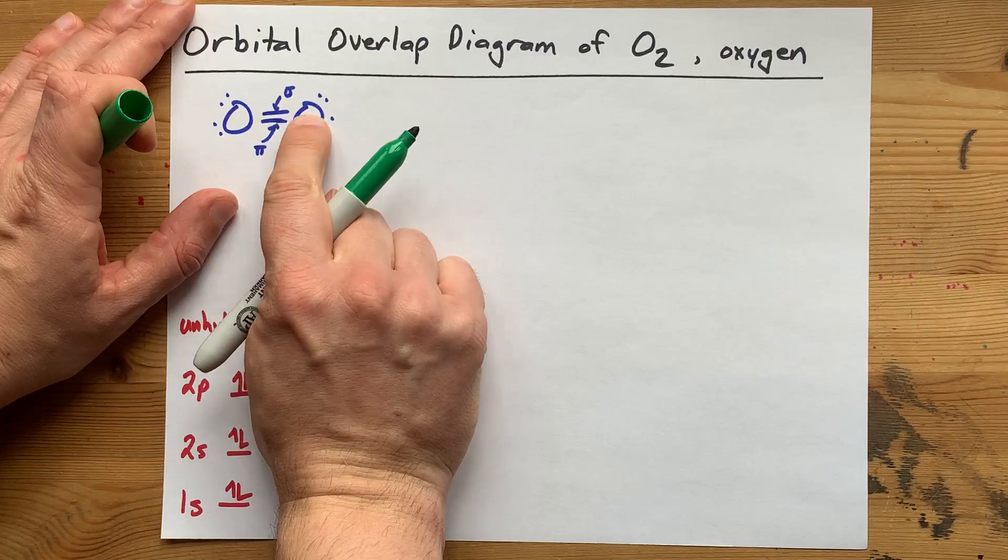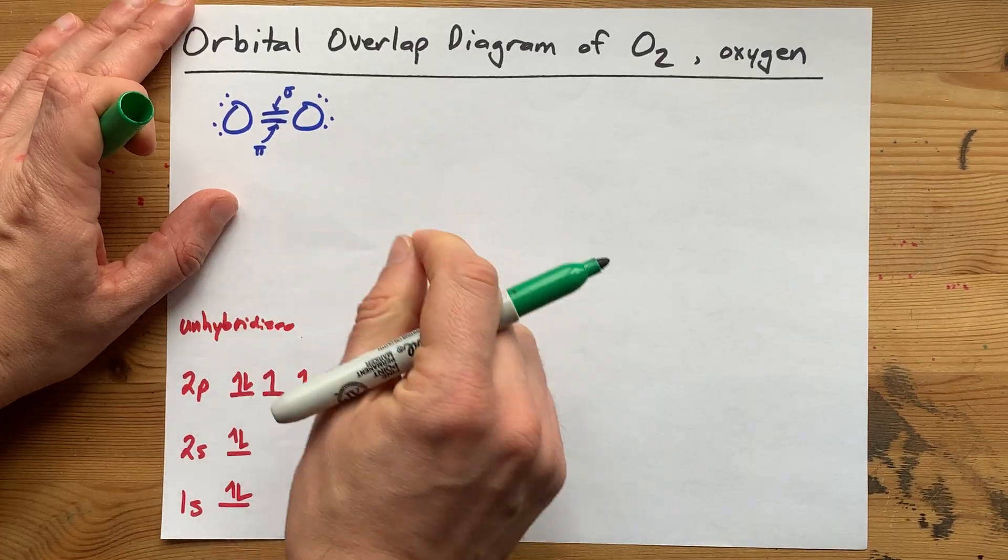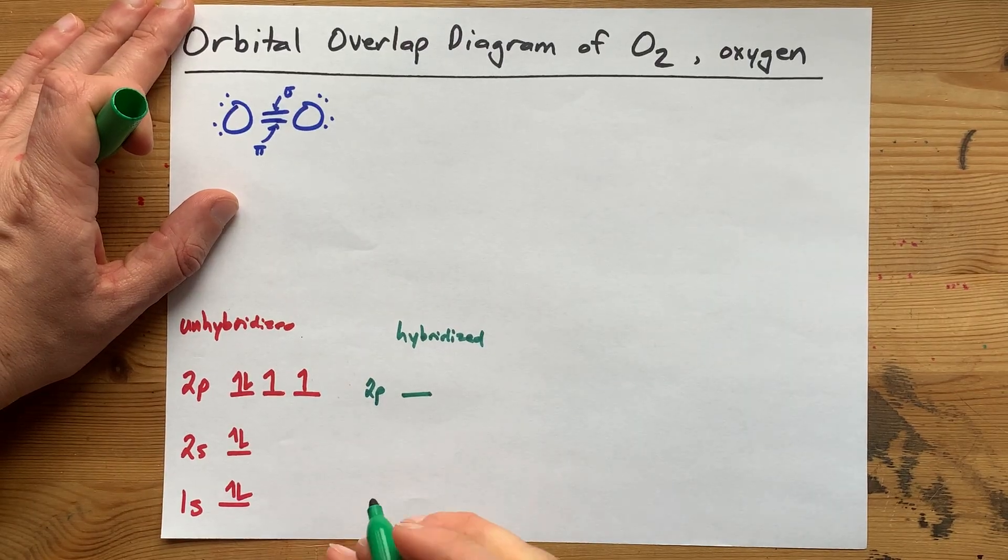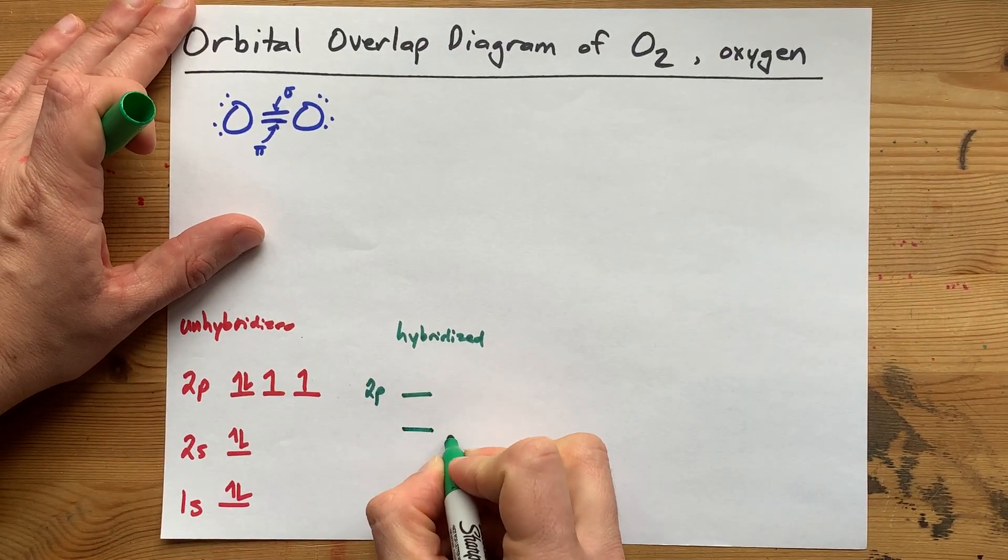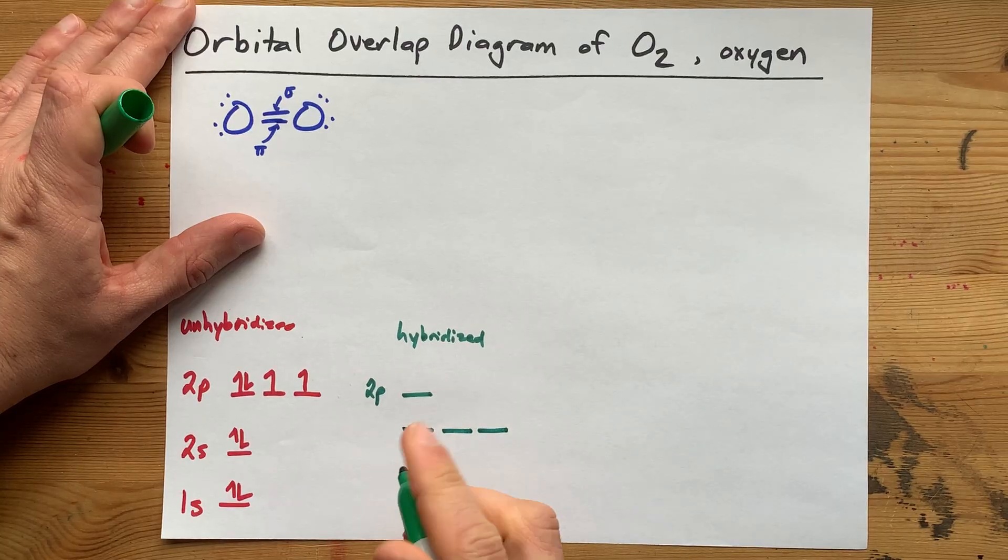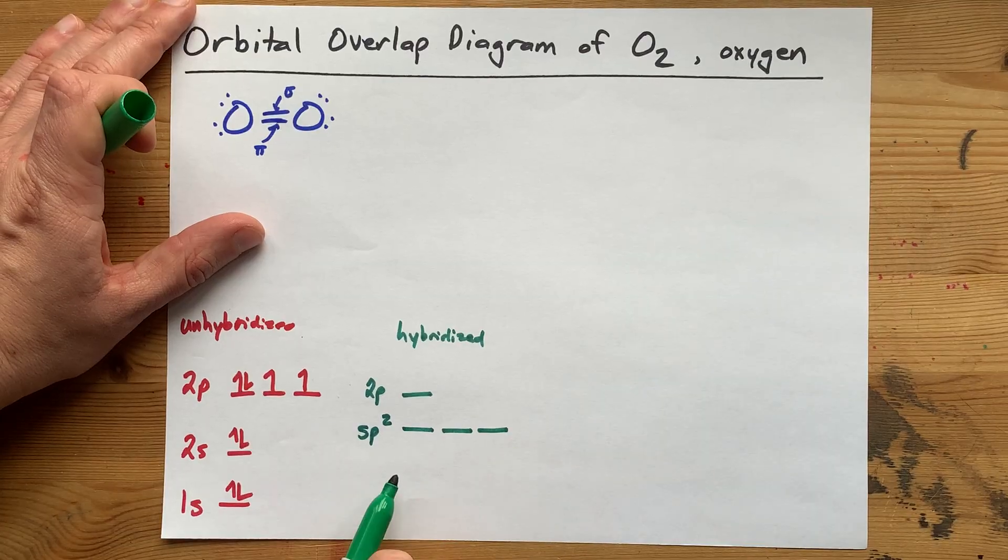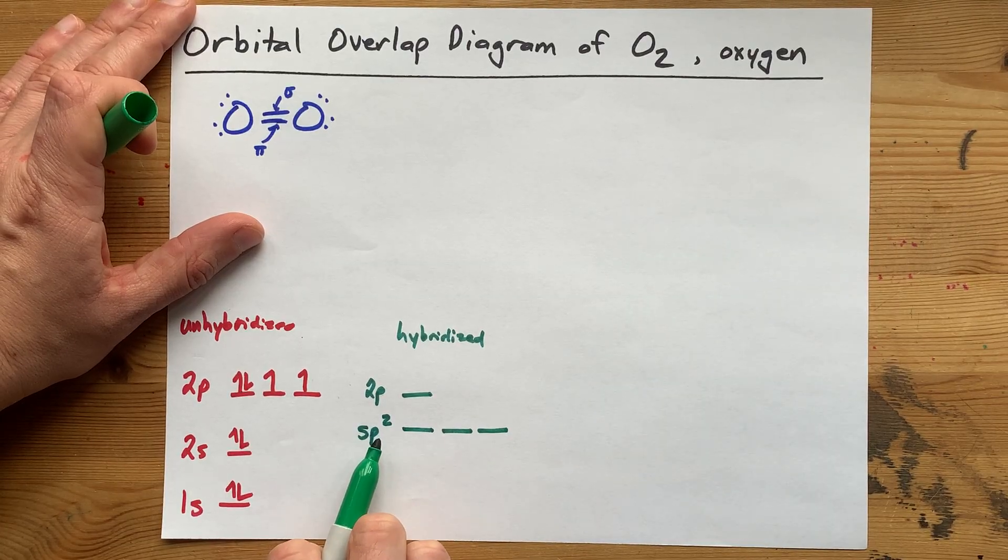And the s and the other two p orbitals hybridize together. That sigma bond and those lone pairs can all be in hybridized orbitals, but the pi bond needs a leftover 2p. So an s and two of the p's combine to make what we call sp2 hybridized orbitals. Get it? An s and two of the p's.